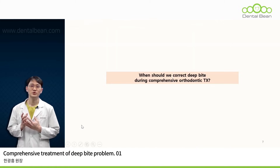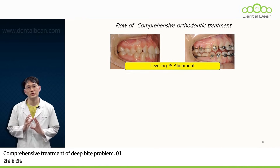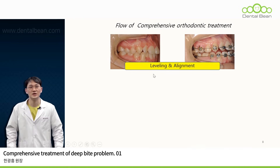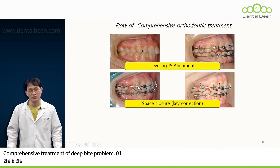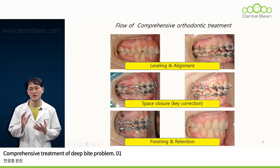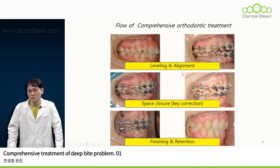When is the appropriate time to address a deep bite within comprehensive orthodontic treatment? Comprehensive orthodontic treatment involving brackets and wires can be broadly categorized into three distinct phases. The initial phase involves leveling and alignment, which entails affixing brackets and inserting wires to bring the teeth into proper alignment. Subsequently, if premolar extractions are performed, the second phase is the space closure stage, during which we close these spaces and progressively achieve a class one key relationship for the canines and posterior segments. The third stage involves finishing to achieve better interdigitation, followed by the retention phase to maintain the occlusion we've created.